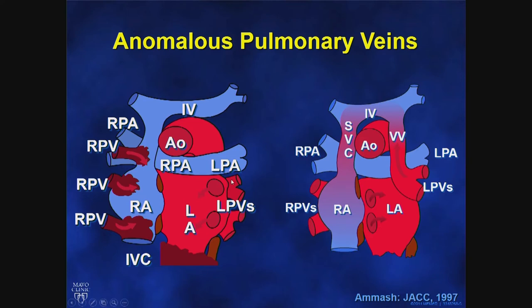80% of anomalous pulmonary veins empty into the SVC, right atrium, or IVC, so right-sided anomalous pulmonary venous connection accounts for around 80%. 20% of anomalous veins will come from the left lung, sometimes from the left upper vein or left upper and lower pulmonary vein, draining into a vertical vein, into the innominate vein, then SVC, right atrium, right ventricle. All of these veins cause volume overload of the right heart chambers with right ventricular enlargement and increased pulmonary blood flow, similar to atrial septal defects — the hemodynamics are very similar.